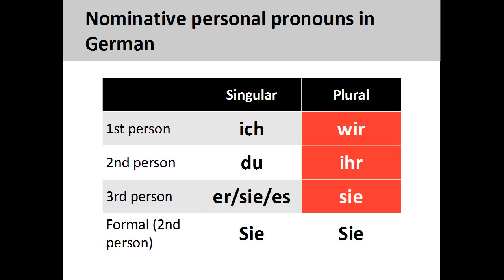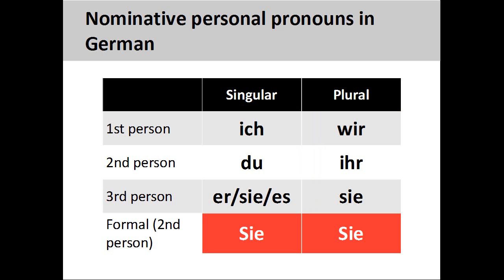The final group to appear on the stage is a group of actors separate from the first two groups. We would therefore refer to these actors as sie, they. Before we go any further, it is important to note that German has a formal form of address — Sie, you sir or you ma'am — which is used with strangers, business associates, acquaintances, and situations outside of the family. As you see on the screen, there are both singular and plural second person forms of this personal pronoun, and both forms are capitalized.